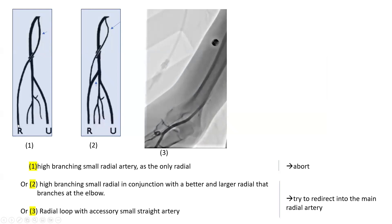You could be having a high branching small radial that is the only radial. In that case, you will most often have to abort. You can try to give vasodilators through the catheter, but if you keep encountering difficulties, you may have to abort. Keep in mind that most often a high branching single radial is usually large, and a lot of the time you don't even pay attention to it. This is seen in 7% of individuals. But when it's high branching and small and it's the single radial, you may have to abort if it persists being small despite vasodilators.